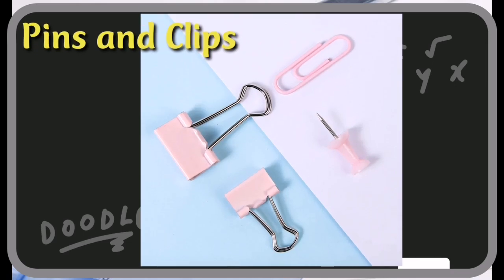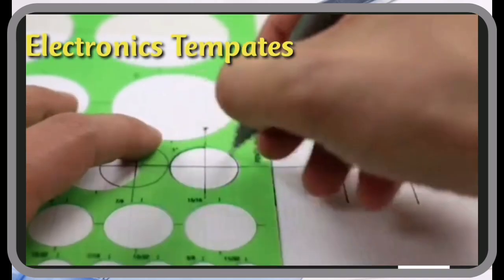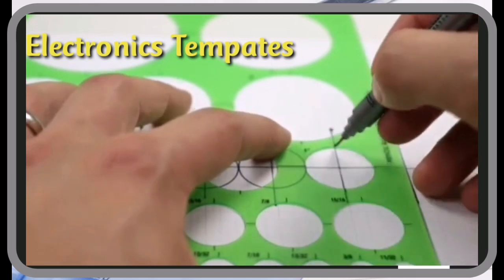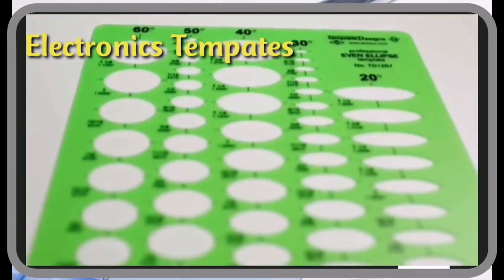Drawing pins and clips are used to fix drawing sheet or drawing paper onto the drawing table. Electronic template is mostly made of flexible plastic that has different symbols and designs that can be traced by using a drawing pencil.